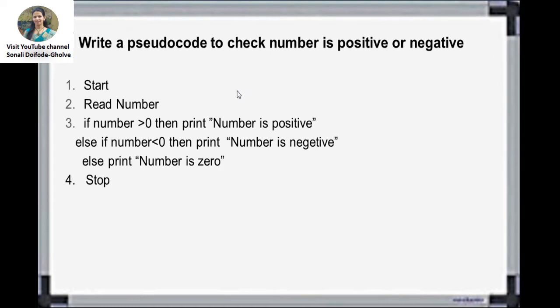Here is one example: write the pseudocode to check if a number is positive or negative. We are checking whether the number is positive or negative. If the number is greater than 0, then print 'number is positive'. If not greater than 0, then print 'number is negative'. So for this, we will start from the first step — the first step will be START.